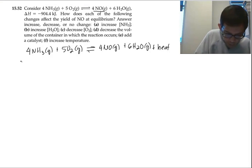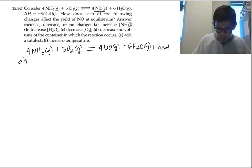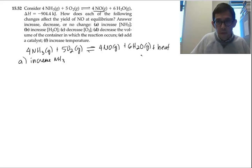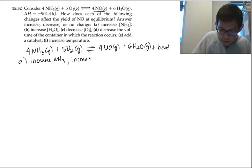Part A. If you increase NH3, the equilibrium shifts right to get rid of the NH3. So when you shift right, you increase the amount of NO. Increase NH3, increase NO.